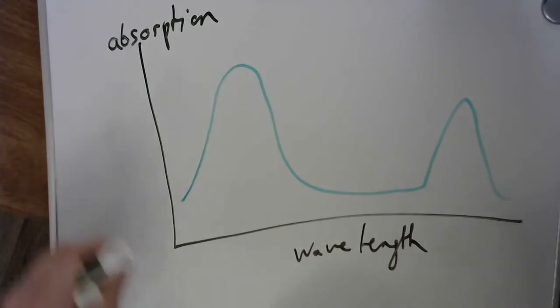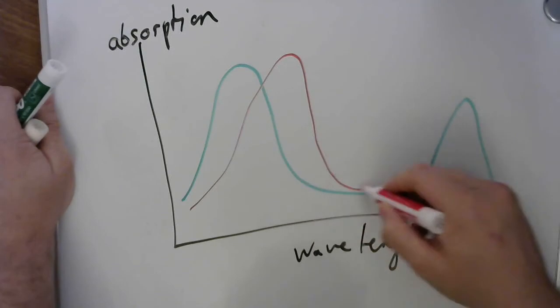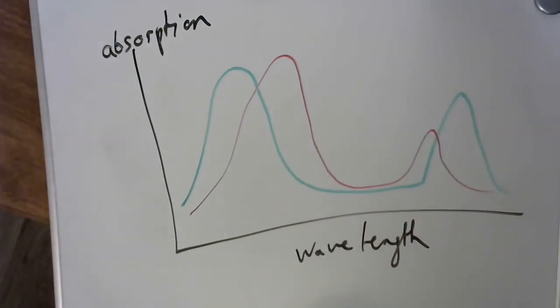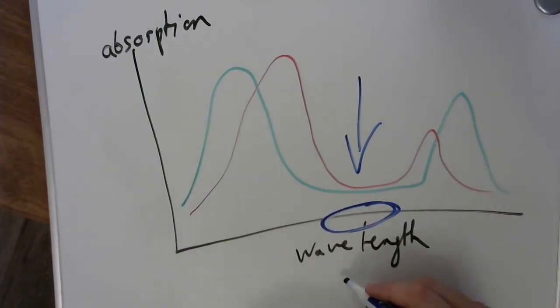The carotenoids and anthocyanin is something more like that. And notice how nothing is absorbing around here. What's around here in the wavelength? If you look at our graph, this is where the green colors are.